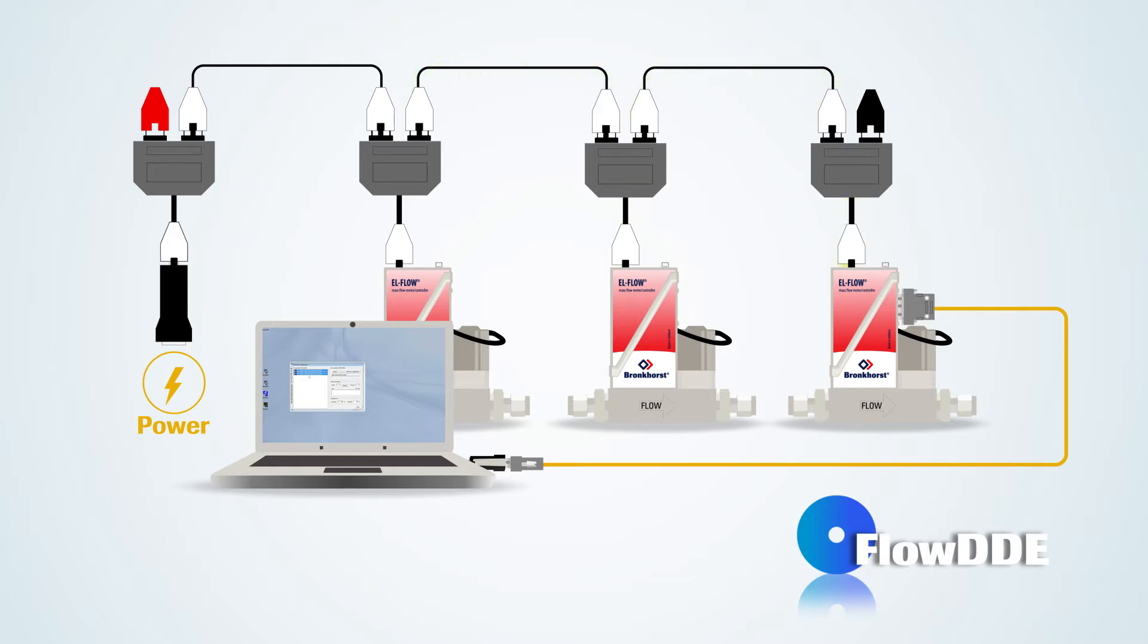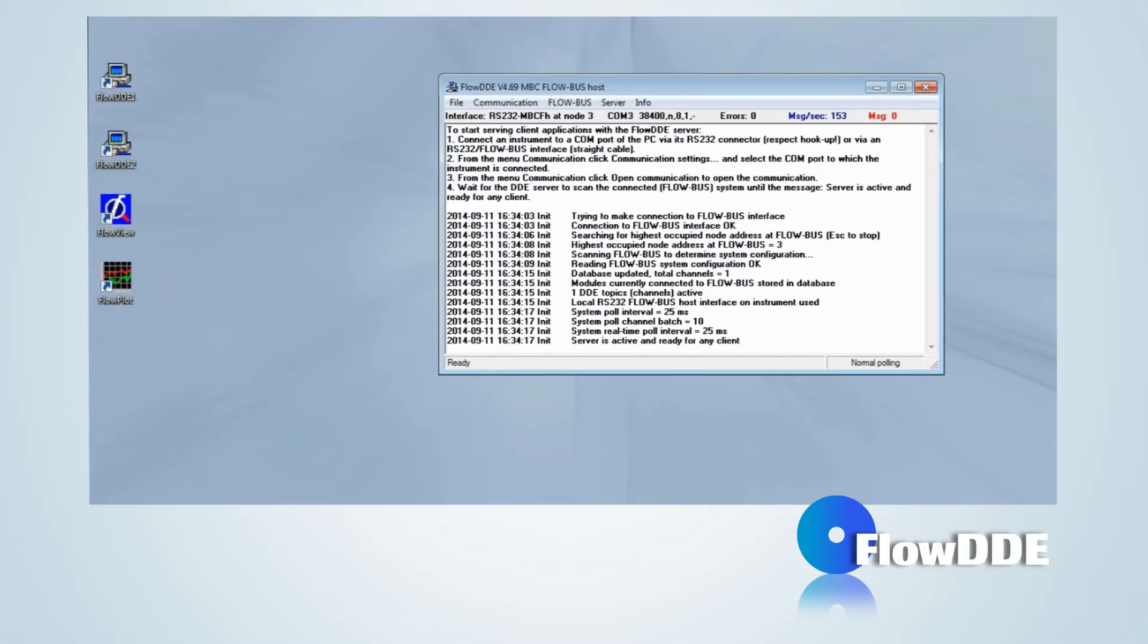The values of these parameters are updated after each poll, so clients don't need to actively refresh these before using. From here on, Flow DDE is ready for any client. The Flow DDE window can be minimized. The DDE server remains active until the communication is closed.